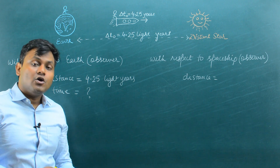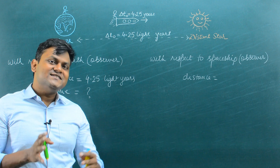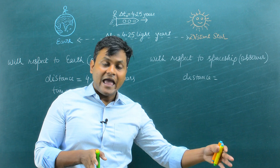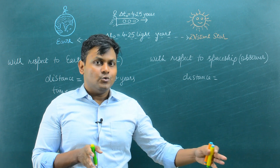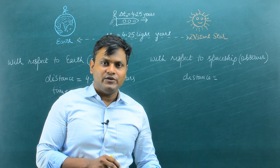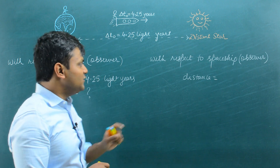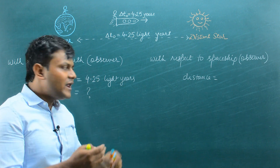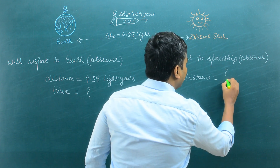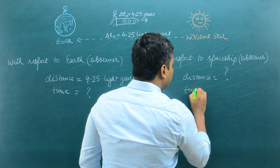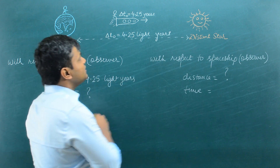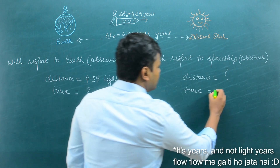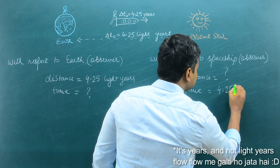Length contraction, or Lorentz contraction, is when you measure the distances between two points in space when you are at rest versus when you are in motion. When you are in motion, the distance between two points appears to be contracted. So the distance measured by the spaceship is not going to be 4.25 light years — it's going to be contracted. The time period is given: according to the spaceship, the journey takes 4.25 years according to the clock on the spaceship.